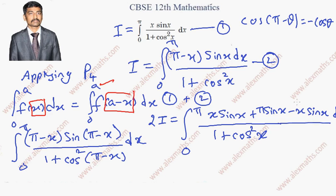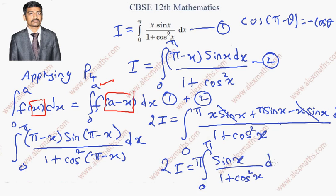Now, I can cancel minus x sin x and plus x sin x. And the remaining term is 2I equal to integral 0 to pi. And this pi is a constant, we can take it out. So, sin x whole divided by 1 plus cos square x dx.